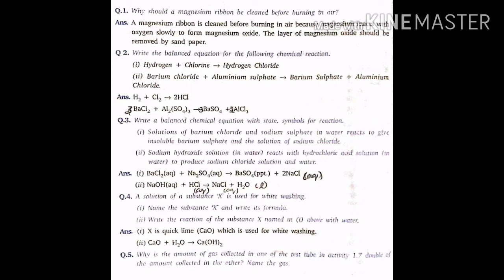Question number 4. A solution of substance X is used for whitewashing. Name the substance X and write its formula. Number 2, write the equation of the substance X with water. Answer: X is quicklime CaO, which is used for whitewashing. Second one, the CaO when reacts with water produces calcium hydroxide. The equation is CaO plus H2O gives Ca(OH)2.